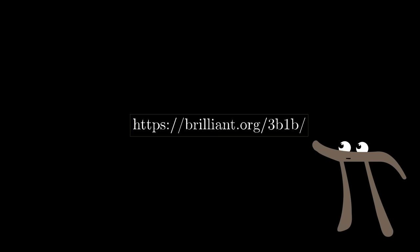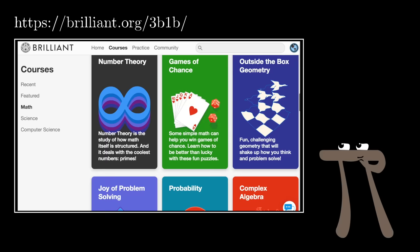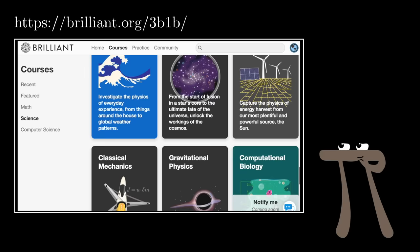So you can go to brilliant.org slash 3b1b to let them know that you came from here, or even slash 3b1bflipping to jump straight into this quiz, and you can make an account for free. A lot of what they offer is free, but they also have an annual subscription service if you want to get the full suite of experiences that they offer, and I just think they're really good. I know a couple of the people there, and they're incredibly thoughtful about how they put together math explanations.